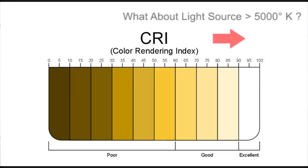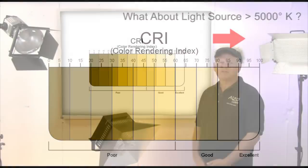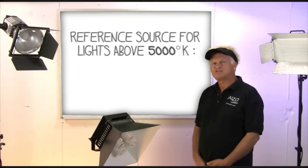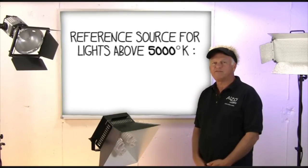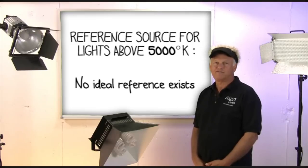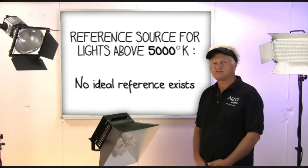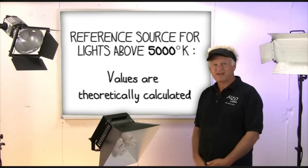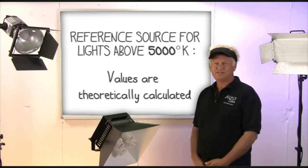How about light sources with color temperature greater than 5000 degrees? What is the ideal reference source? For the determination of CRI value of light sources above 5000 Kelvin, there is no ideal reference. In fact, all values of CRI for light sources above 5000 degrees Kelvin are theoretically calculated. What does that mean?